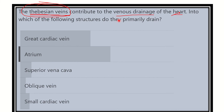So here are the options: the great cardiac vein, atrium, superior vena cava, oblique vein, and small cardiac vein. We have to find out into which one of these options the Thebesian vein drains.